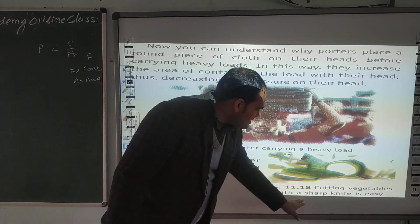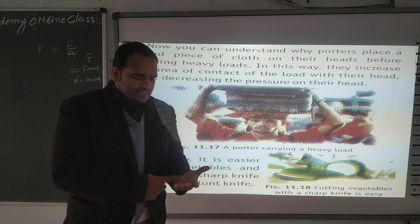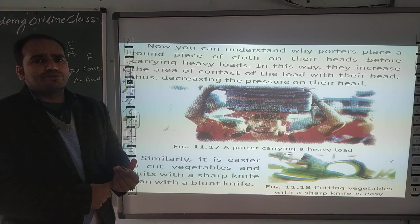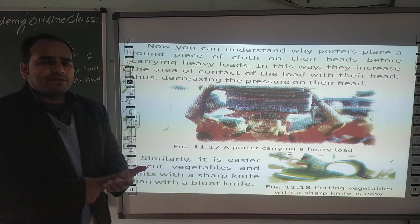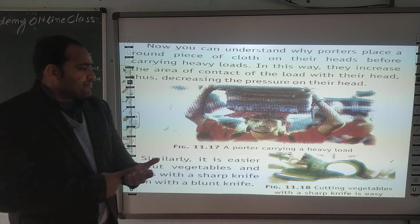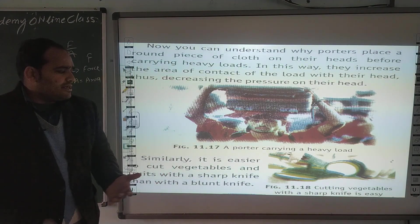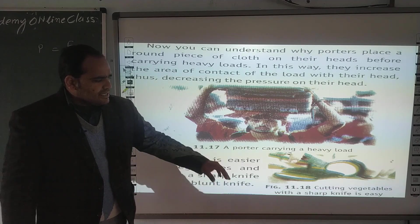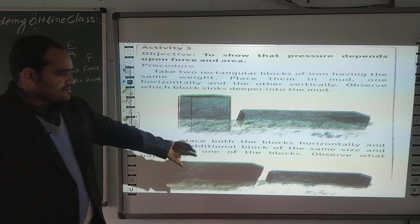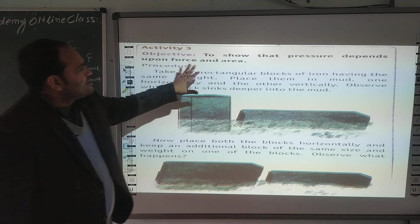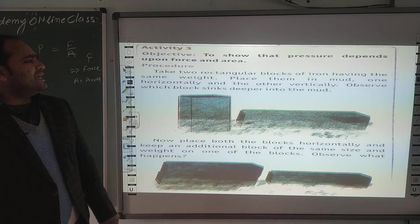Cutting vegetables with a sharp knife is easy। अगर sharp knife की जगह हम एक blunt knife use कर रहे हैं, तो blunt knife vegetables को अच्छे से cut नहीं कर पाएगा। But अगर हम sharp knife use करते हैं, तो pressure ज्यादा पड़ता है। So, pressure depends upon force and area।